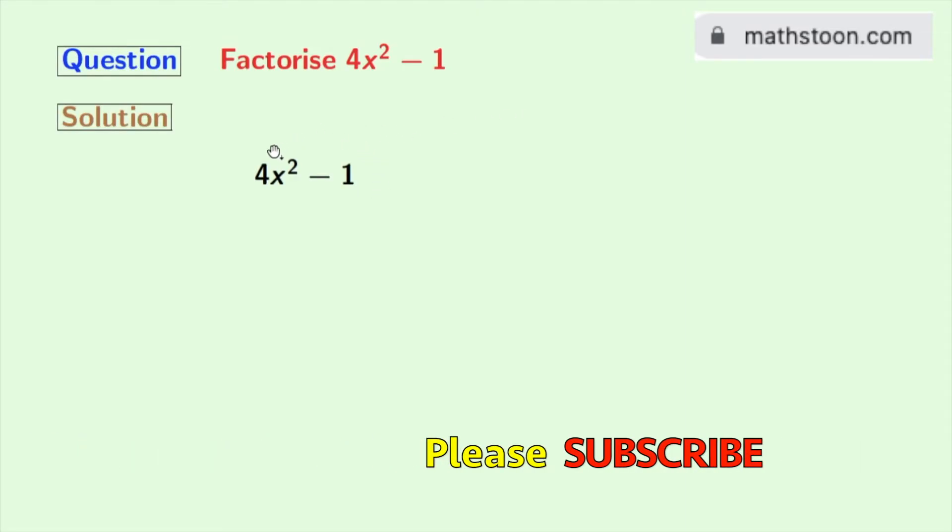This is our given expression, that is 4x² - 1. Now we will express each term as the square of something. Doing that we get (2x)² - (1)².